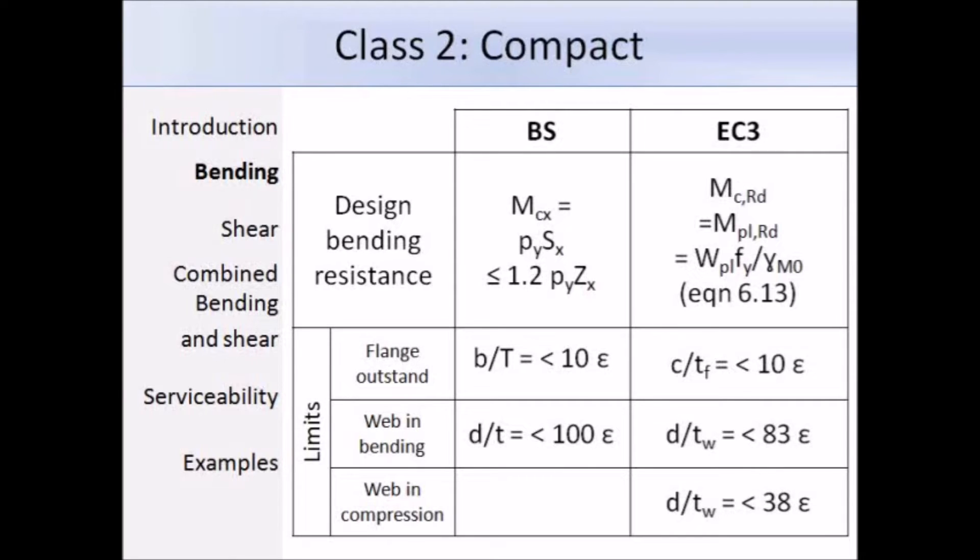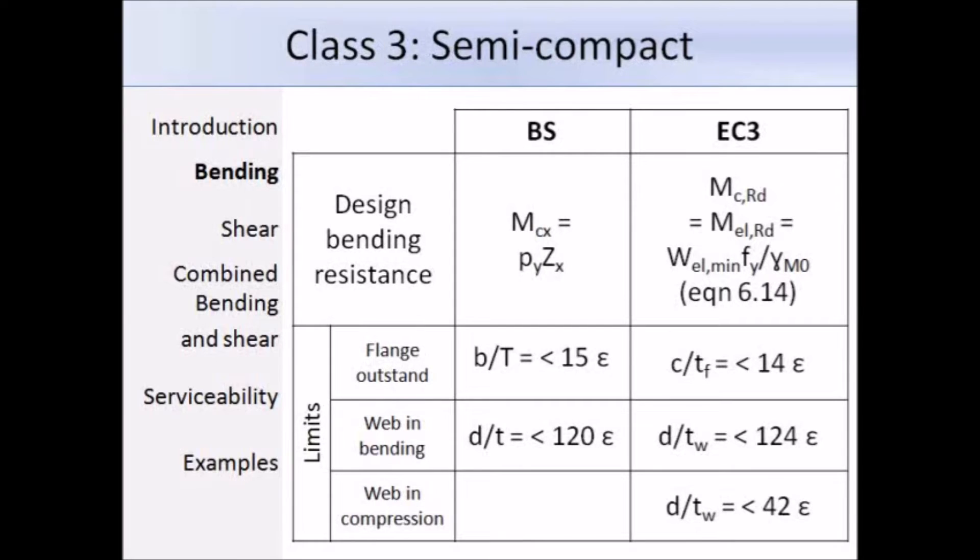Now we come to class 3 sections. Eurocode 3 defines these as cross sections in which the stress in the extreme compression fibre of the steel member, assuming an elastic distribution of stresses, can reach the yield strength, but local buckling is liable to prevent development of the plastic moment resistance. Again you can see the difference between 5950 and Eurocode 3: 15ε, 14ε, 120ε, 124ε, so there's really not much change. Only class 1 and 2 sections make use of plastic design resistance Mpl,Rd. Class 3 sections use the elastic design resistance denoted by the EL subscript. The design bending resistance expression for a class 3 section is the elastic modulus times the yield strength divided by a partial factor, and this is expression 6.14 in Eurocode 3.